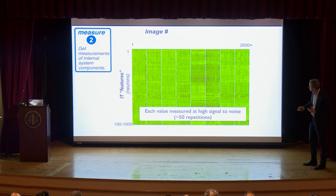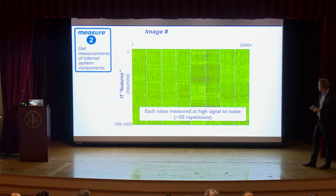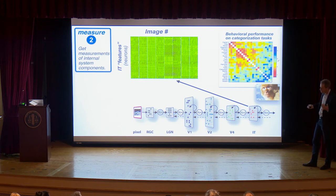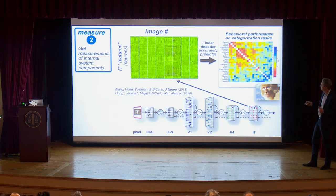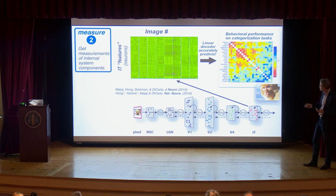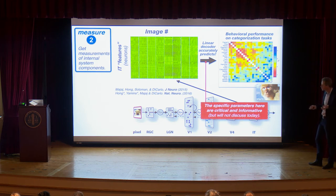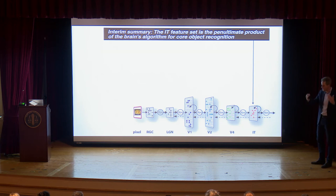We measure at high signal-to-noise ratio — 50 repetitions each to get a sense of what a neuron really responds to on average. Over the last decade we showed that simple linear decoders, trained on a bit of data, can accurately predict performance on held-out images and reproduce behavioral patterns. This is already one turn of the reverse engineering cycle. The IT feature set is essentially the penultimate product of the brain's algorithm for core recognition — a linear transform is sufficient to produce the behavioral performance we see in both animals.